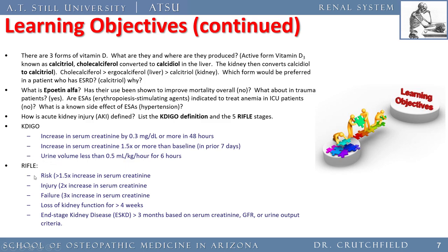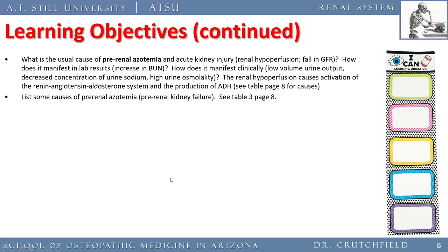Using the RIFLE mnemonic — Risk, Injury, Failure, Loss of kidney function, End-stage renal disease — there are defined thresholds for impending renal failure. Renal failure doesn't necessarily mean the kidney itself is failing; it could be pre-renal or post-renal. Red flags include creatinine rising 1.5 to 2 to 3 times normal, loss of kidney function for more than four weeks, and if that continues for more than three months based on rising serum creatinine, falling GFR, or dropping urine output.